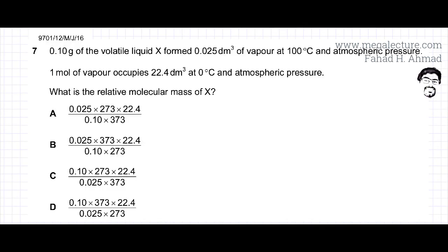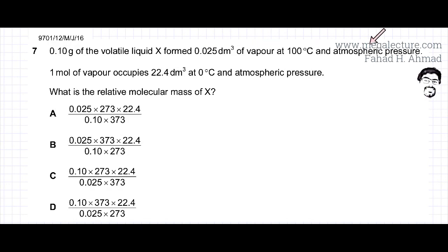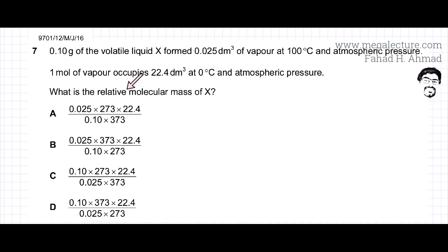The question states that you have 0.1 grams of a volatile liquid X, and 0.025 grams of vapor is formed at 100 degrees centigrade and atmospheric pressure. It also states that 1 mole of vapor occupies 22.4 dm³ at 0 degrees centigrade and atmospheric pressure. You are asked to find the relative molecular mass of X.